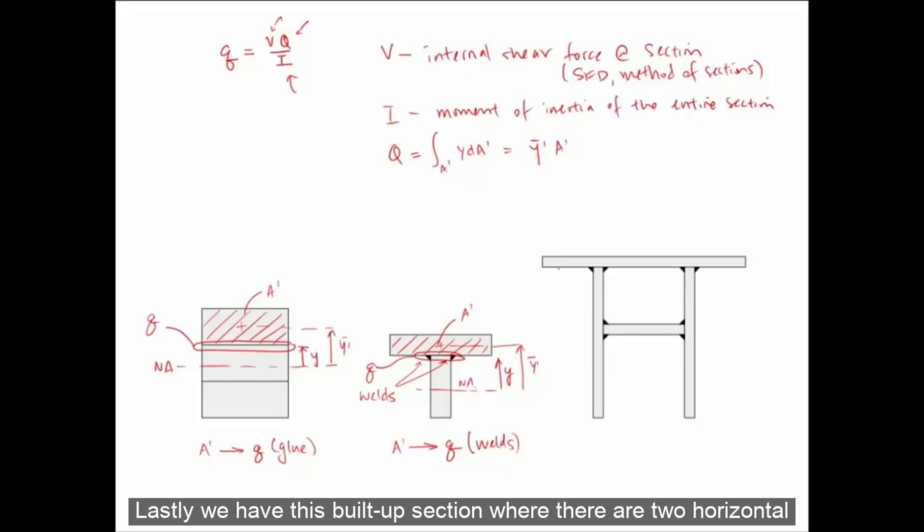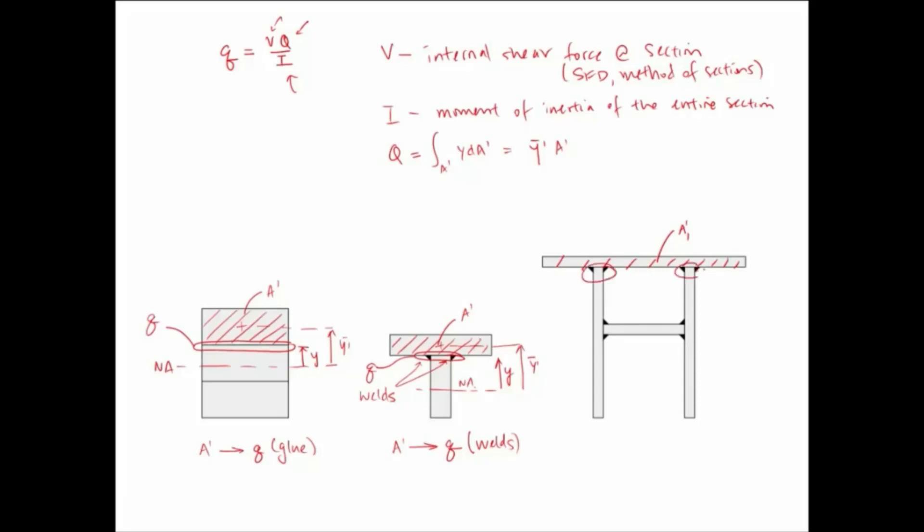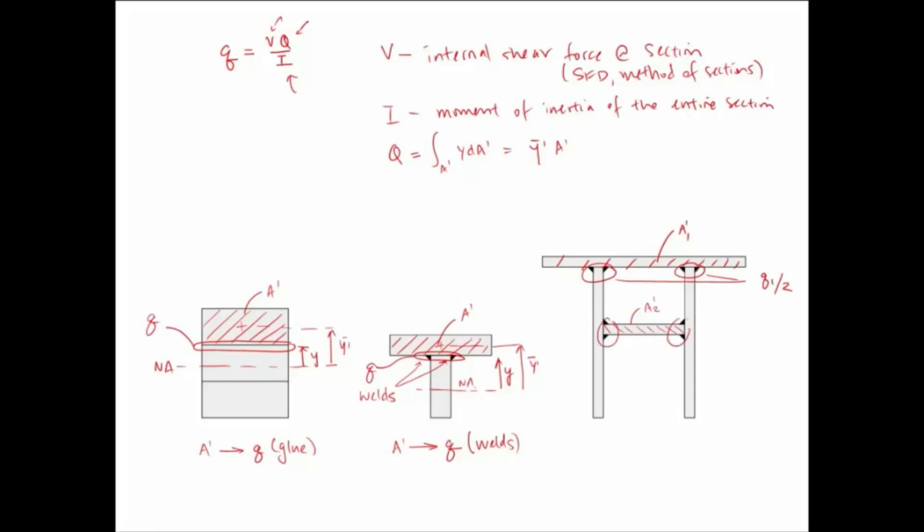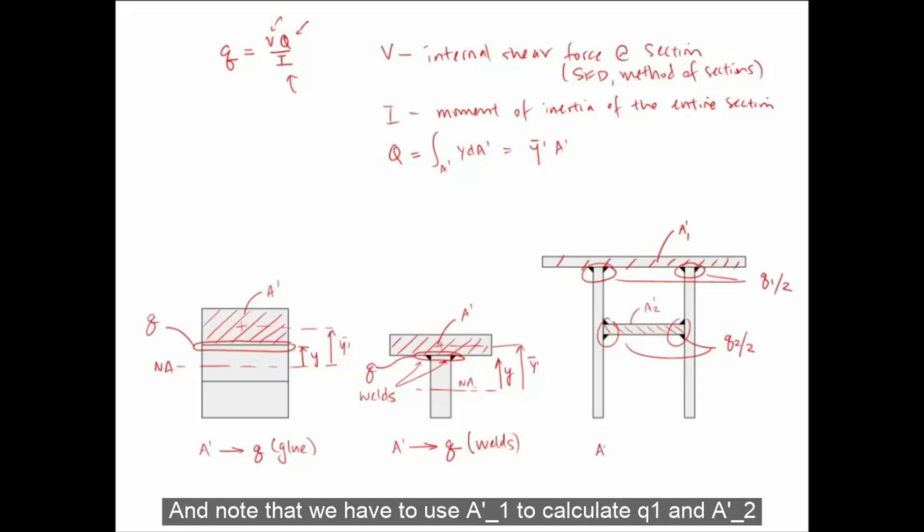Lastly, we have this built-up section where there are two horizontal components and two vertical components and they are all welded together. At the top, if we call this top flange A prime 1, then we can find the corresponding shear flow Q1 for that interface. And since there are two points of contact, the shear flow at each point of contact is half of the total, so that's Q1 over 2. And similarly at the horizontal component at mid-height, that's called A prime 2. Then the shear flow experienced at each of the contact points will be half of the total, so that would be Q2 divided by 2. And know that we have to use A prime 1 to calculate Q1 and A prime 2 to calculate Q2.